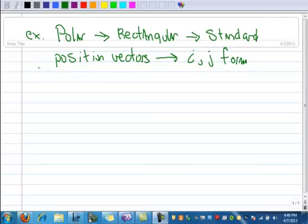All right, let's talk about converting from polar to rectangular, standard form, standard position form of vectors, and IJ form. And you'll see how this kind of all ties in together.